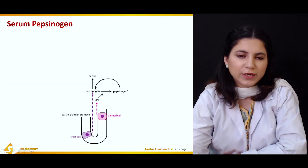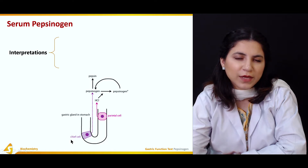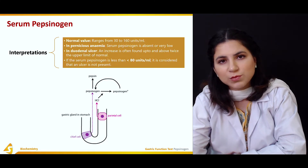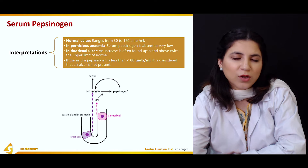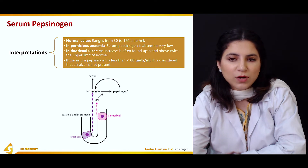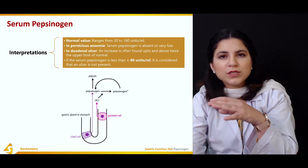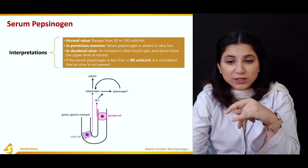Serum pepsinogen is being used to check or to determine the proper functioning of the stomach. Once dried serum is analyzed, we can have different interpretations depending on the type or the range of pepsinogen present in the gastric content. There are different ranges — for example, the normal value ranges from 30 to 160 units per milliliter.